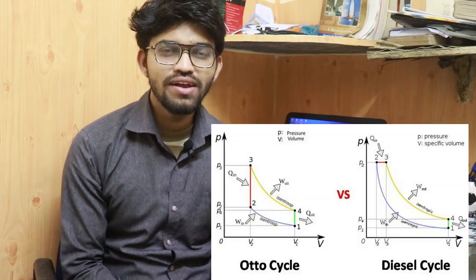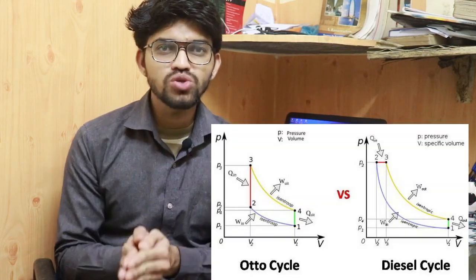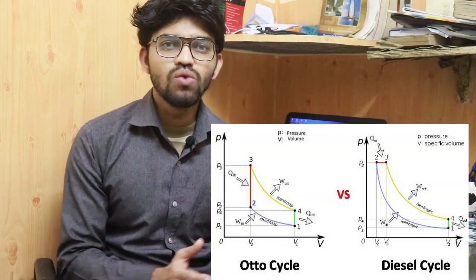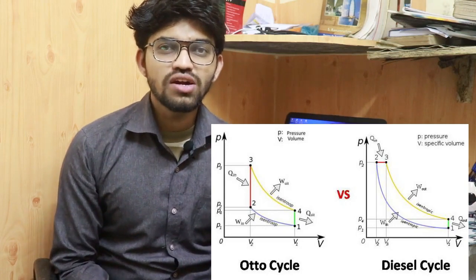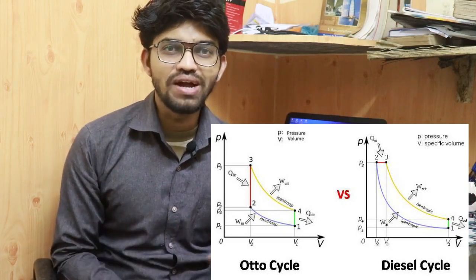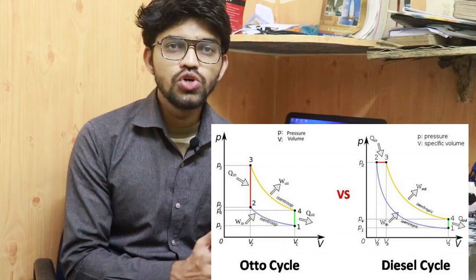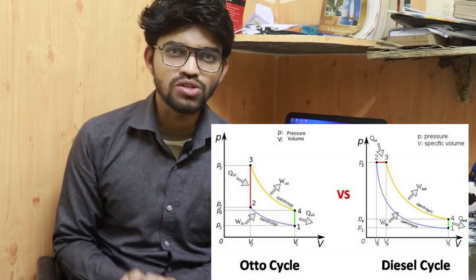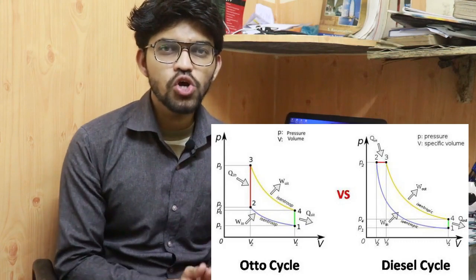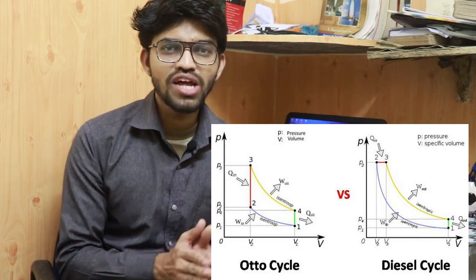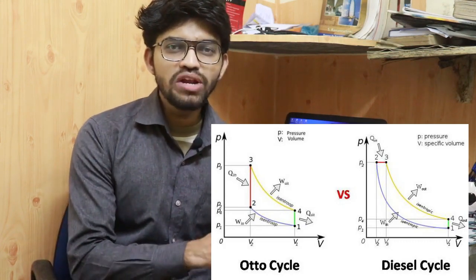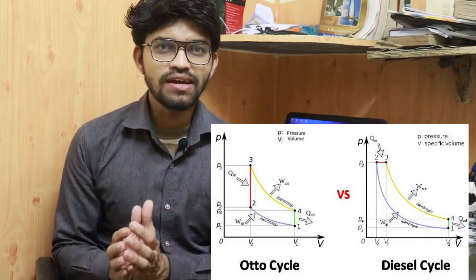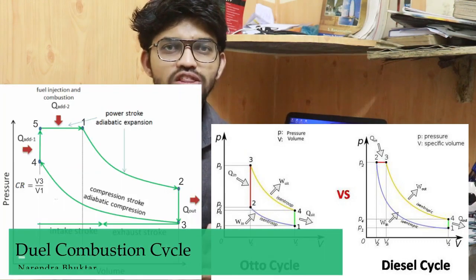Hi everyone, welcome back to another video of Engineers Academy. In our previous video we have seen the Otto cycle that works on constant volume process, and the Diesel cycle that works on constant pressure and constant volume — where heat gets added during the constant pressure process and heat gets rejected during the constant volume process. In this video we are going to learn another new thermodynamic cycle, which is the combination of the Otto cycle and Diesel cycle.